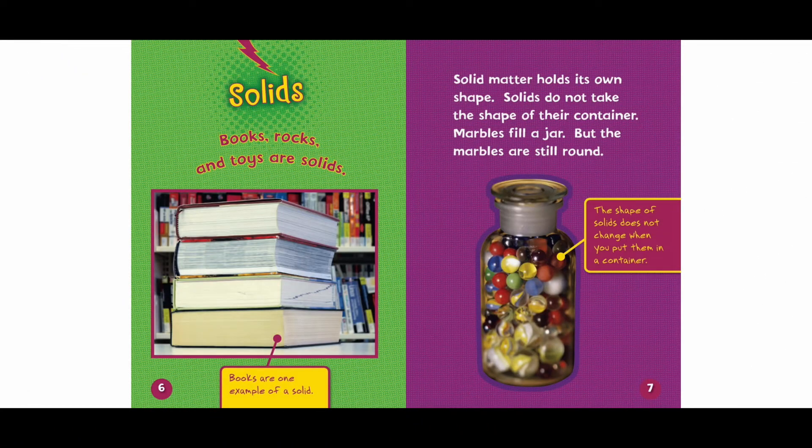Solids. Books, rocks, and toys are solids. Books are one example of a solid. Solid matter holds its own shape. Solids do not take the shape of their container. Marbles fill a jar, but the marbles are still round.